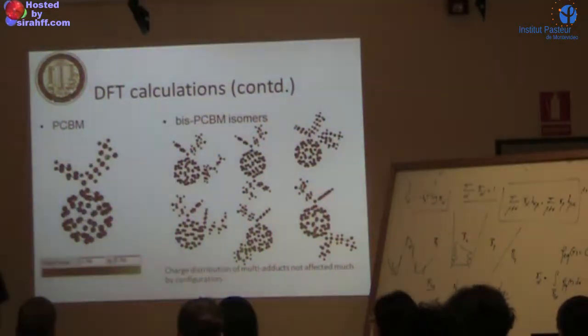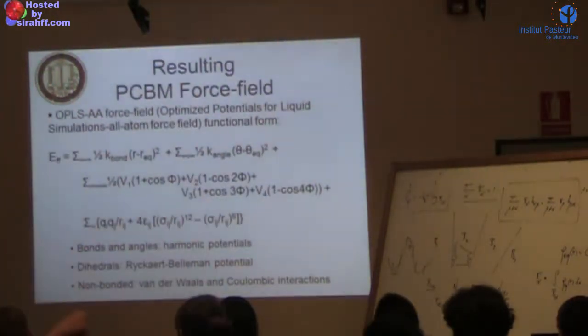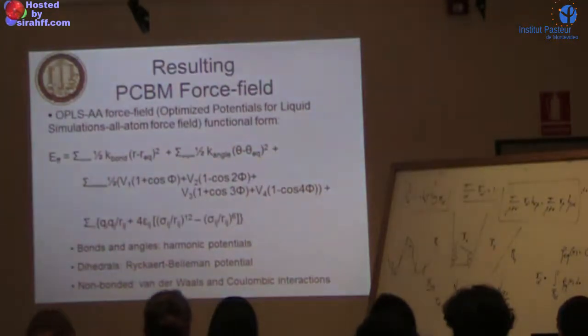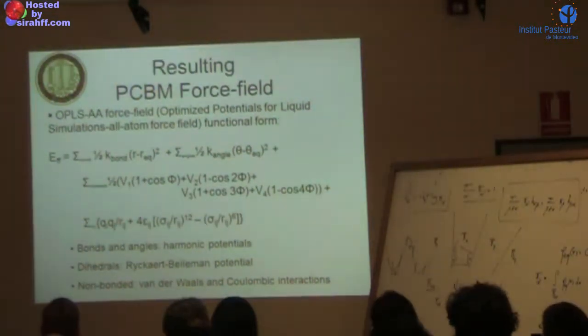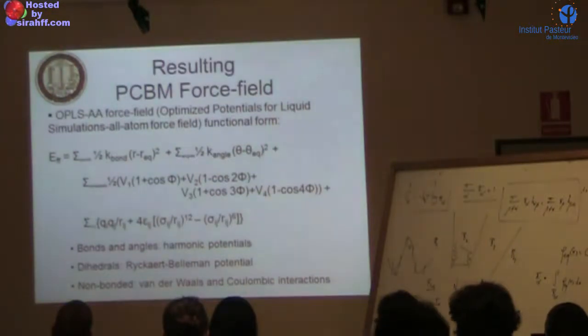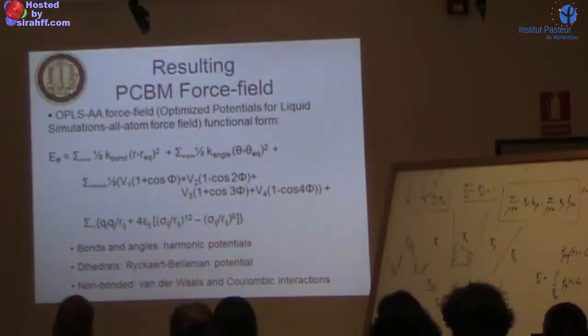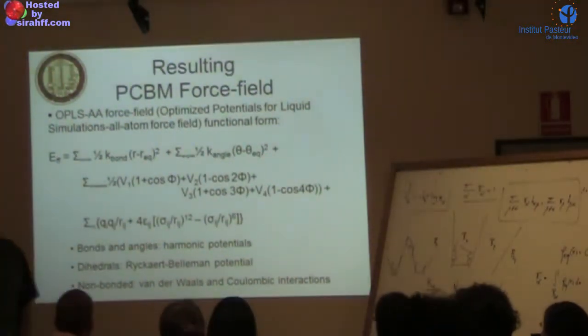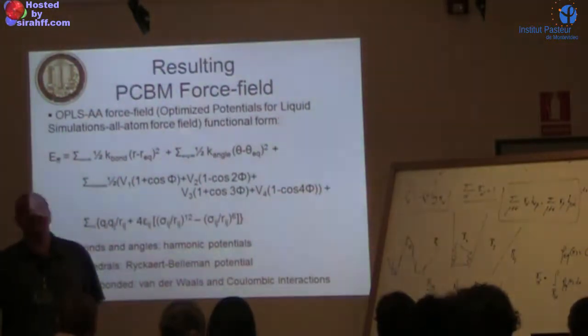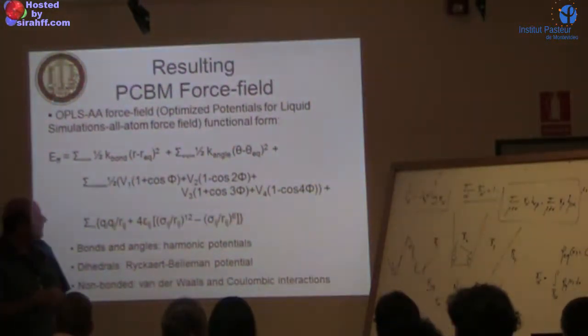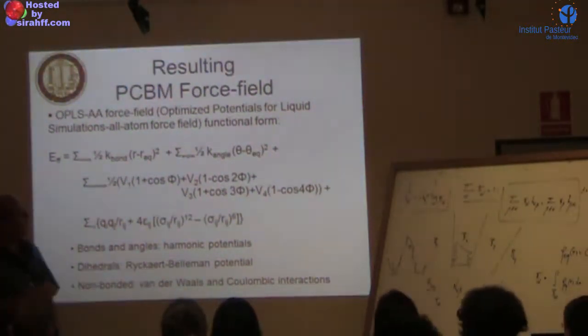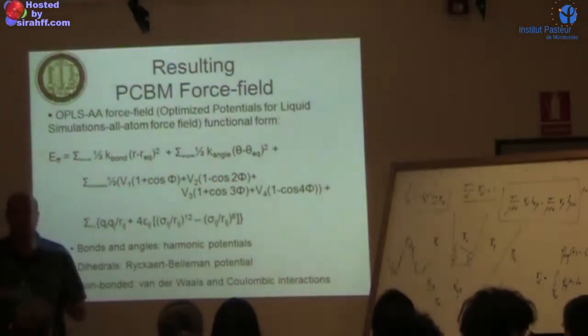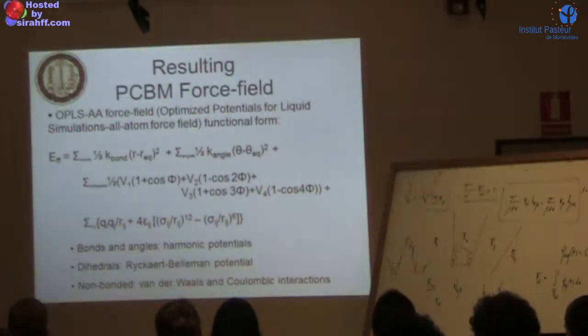The charge distribution of these multi-adducts is not affected much by configuration. So we chose one joint charge model for all of these. This is how the PCBM force field looks like - we use OPLS all-atom. We have bonded distributions for bonds, angles. Then we have a Ryckaert-Bellemans shape for torsions. You can do torsional potentials two ways: Fourier series with cosine squared, cosine cubed, or cosine 2φ, cosine 3φ, cosine 4φ. Then of course we have Lennard-Jones.